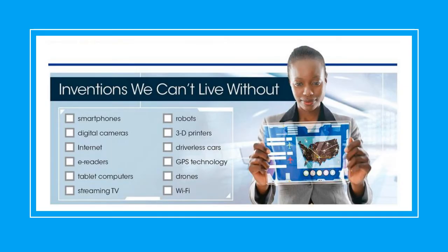For example, we have the application called Google Maps. That application can help us get to places if we don't know how to get to those places. The next one: drones. Drones are flying objects. These objects are used for people to record videos and to take pictures from high places. And to finish, we have a very important invention, which is Wi-Fi. Wi-Fi is the technology that allows people to connect without cables. Wi-Fi is very popular because if you have a cell phone or a computer, you don't need a cable to have access to the internet. You just activate the Wi-Fi option and you connect to the internet.